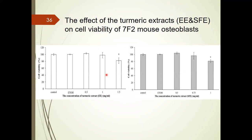We measured the cytotoxicity of turmeric extract in mouse osteoblast 7F2 cells. EE at a concentration in the range of 0.5 to 1.5 mg/mL can maintain 80% cell viability. In contrast, SFE can maintain 80% cell viability at a concentration in the range of 0.5 to 1 mg/mL.